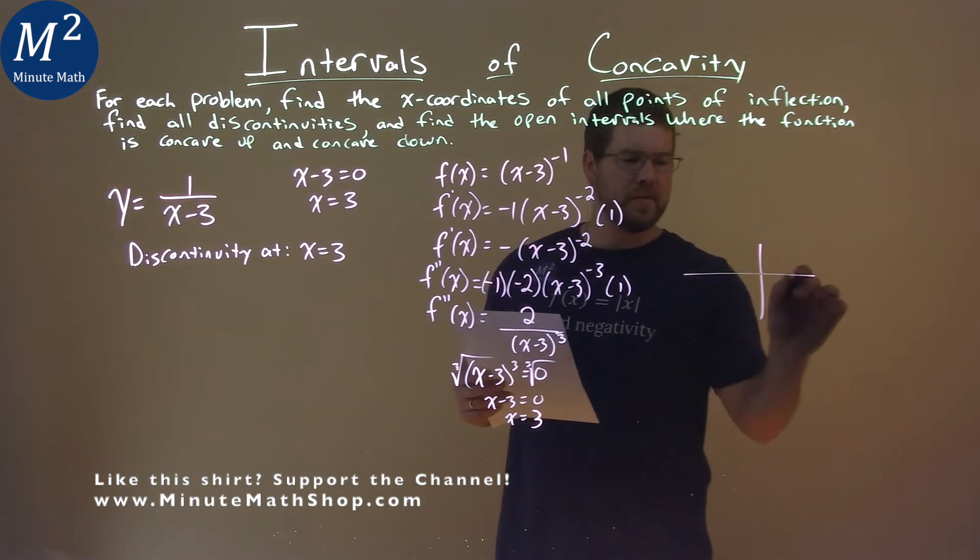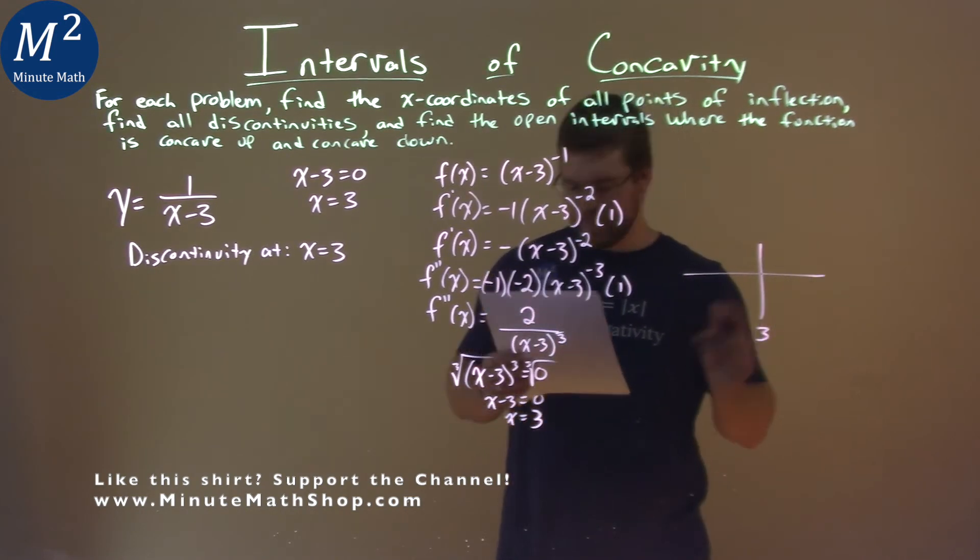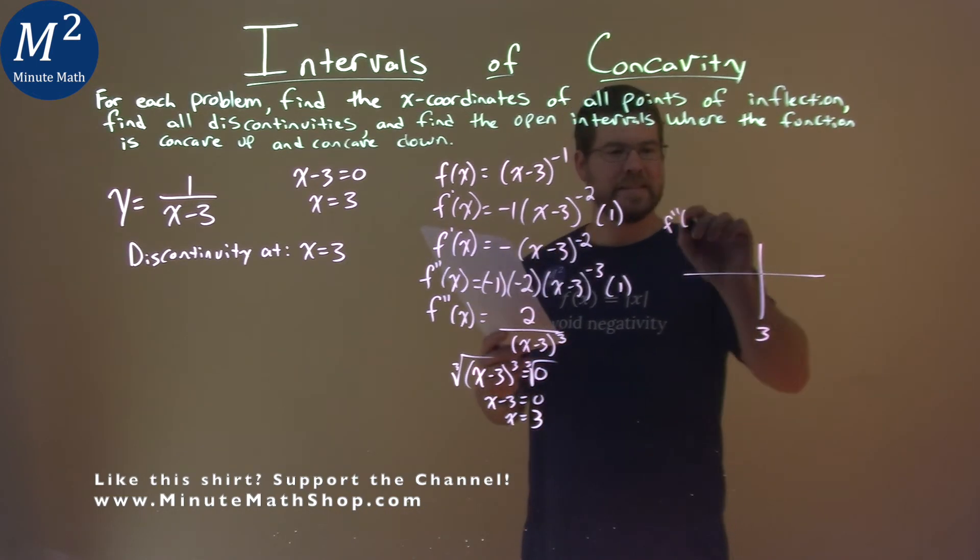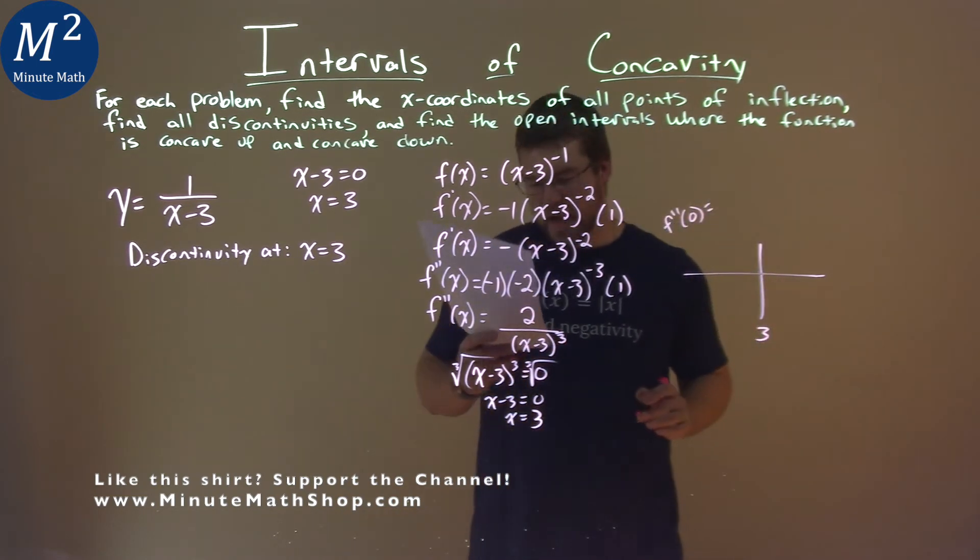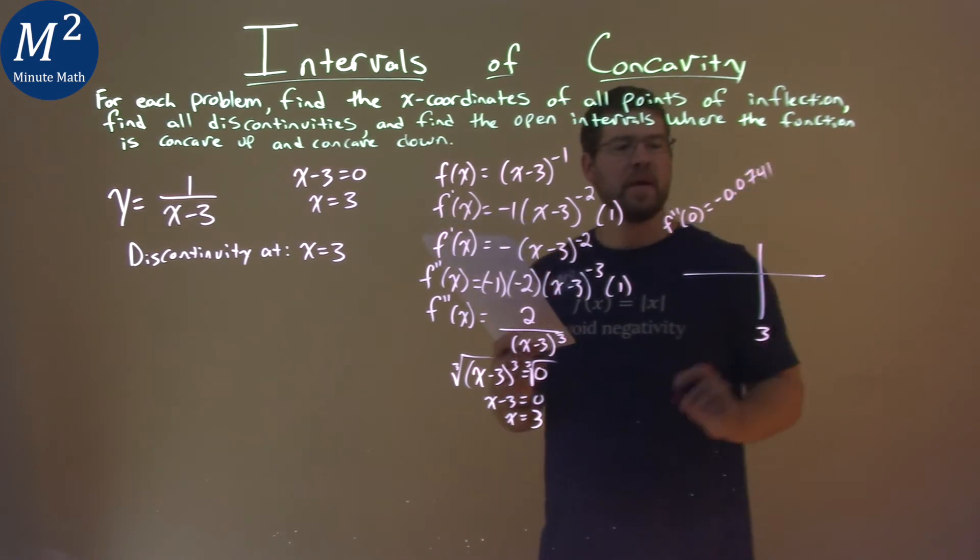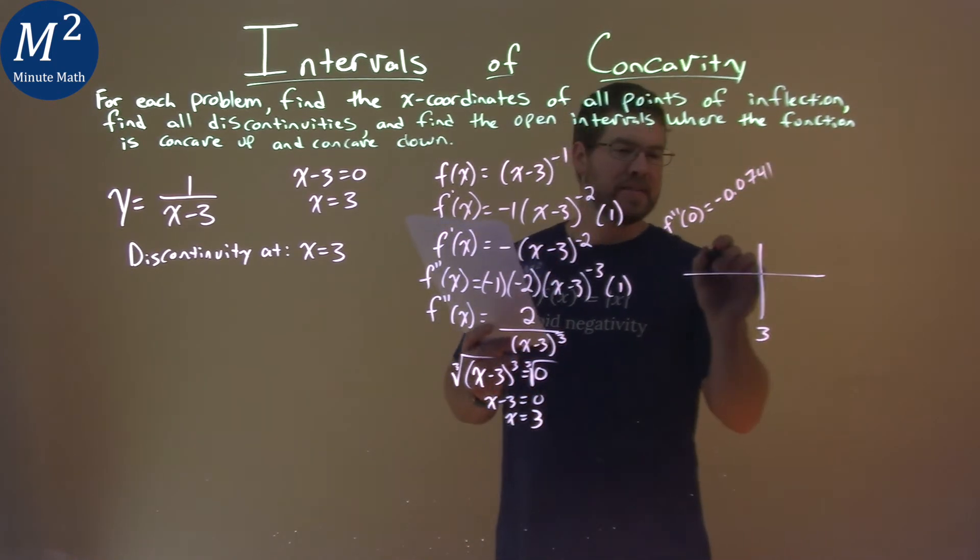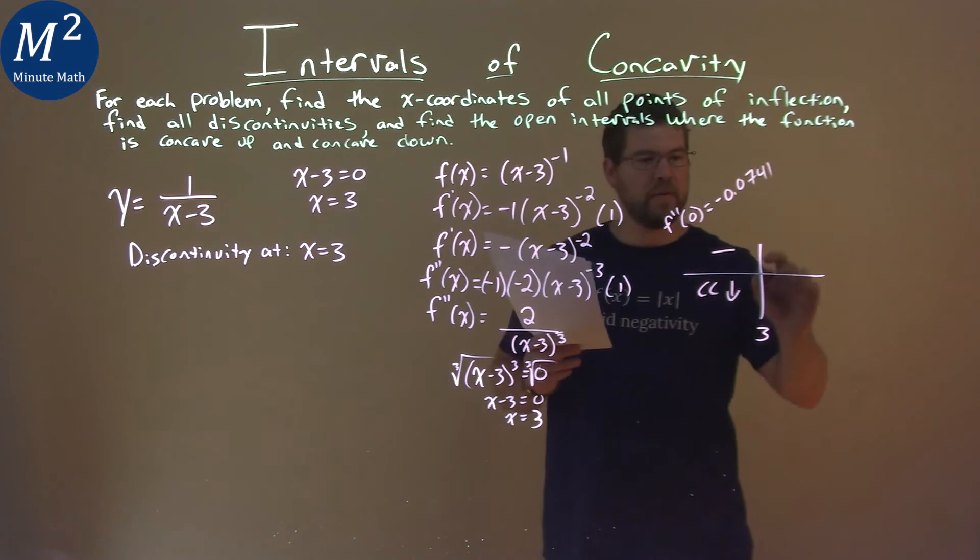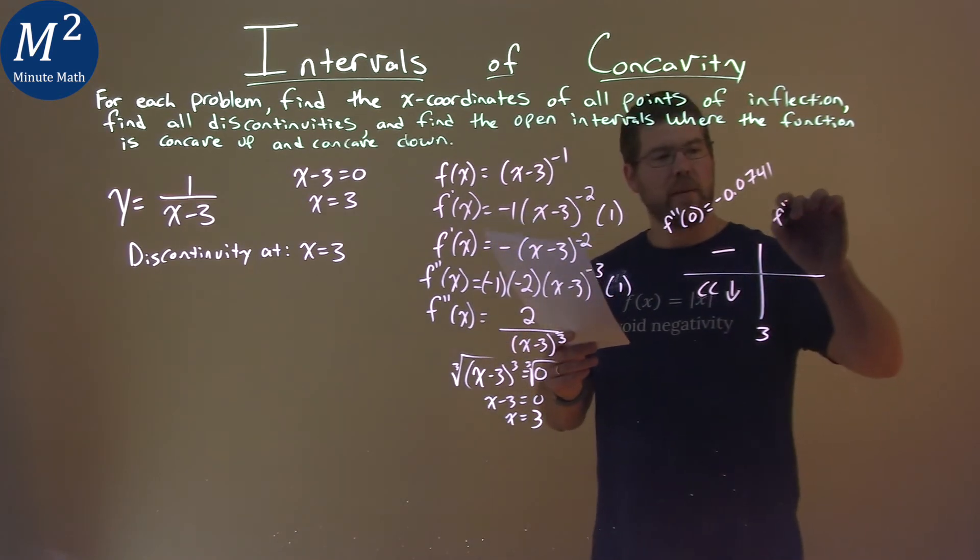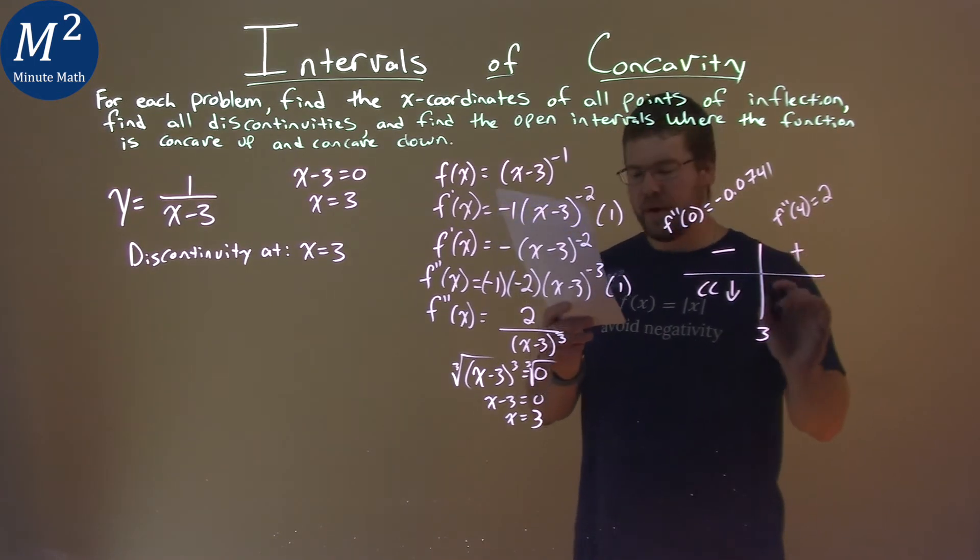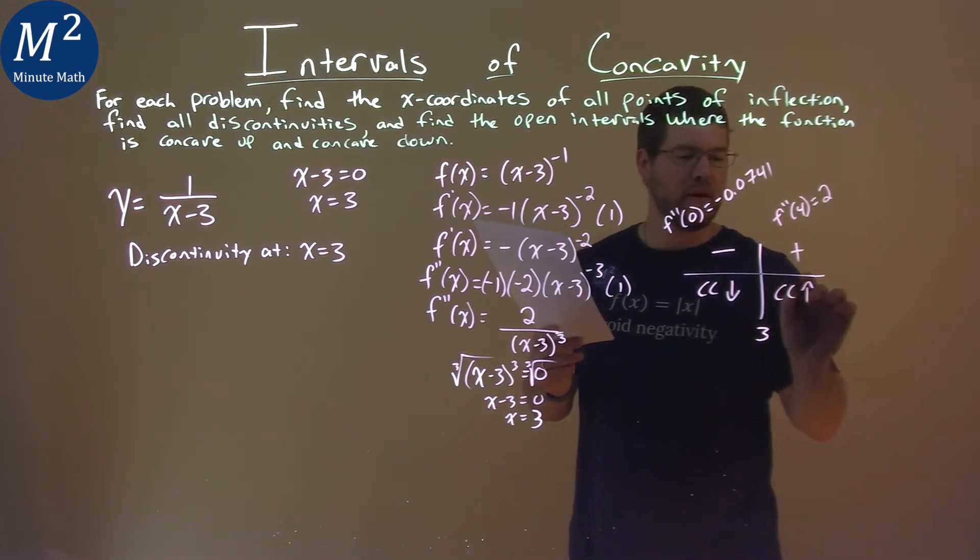So we're going to use our second derivative test, and 3 is going to be our point here. Plugging into our second derivative, f double prime, I picked zero to be less than 3, and I got negative 0.0741. The negative part is what matters, and we're concave down. I picked a value bigger than 3, which was 4. f double prime of 4 came out to be 2. It's positive, and that's what I care about, and we're concave up.